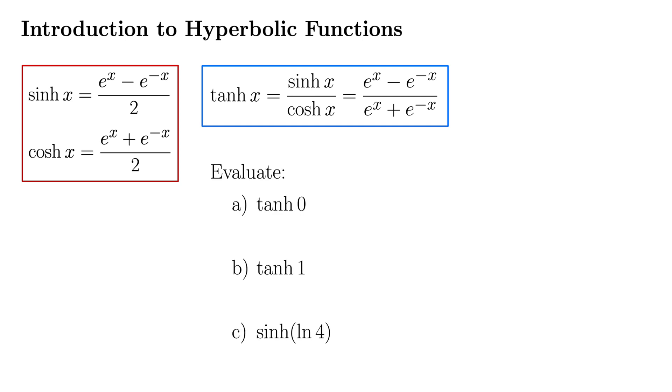Okay, for part A, we have evaluate tanh of 0. Well, we just plug in 0 to our tanh function. There's really not much else to it. So we have e to the 0 minus e to the minus 0, all over e to the 0 plus e to the minus 0. Well, of course, e to the 0 and e to the minus 0 are both 1. So we have 1 minus 1 over 1 plus 1, 0 over 2, which is 0.